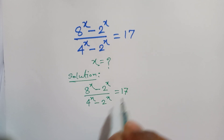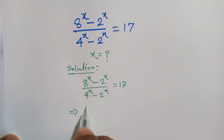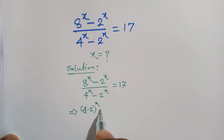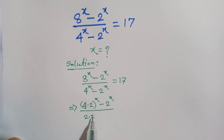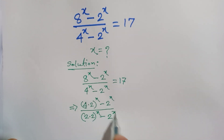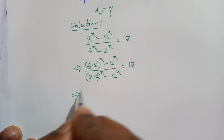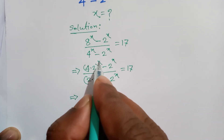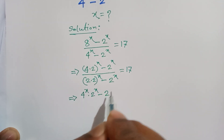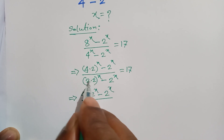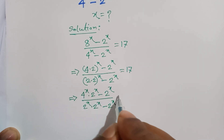8 to the power x can be written as (4 times 2) to the power x, minus 2 to the power x, divided by 4, which can be written as (2 times 2) to the power x, minus 2 to the power x, is equal to 17. Using the rule that (a times b) to the power x equals a to the power x times b to the power x, we get 4 to the power x times 2 to the power x, minus 2 to the power x, divided by 2 to the power x times 2 to the power x, minus 2 to the power x, equals 17.